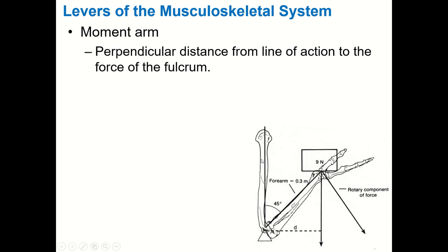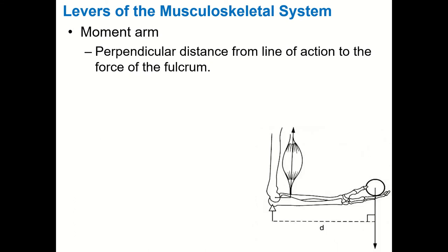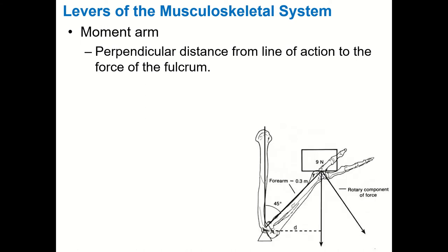With a bicep curl, when you are in the middle position — forearm at 90 degrees — that is when the moment arm of the weight is the longest, so the weight is farthest from the axis of rotation in perpendicular distance terms. If you move further into elbow flexion, that shortens the moment arm, moving it closer to the axis of rotation. The same thing happens if we let the weight drop below 90 degrees of elbow flexion — the weight moves closer to the axis of rotation.